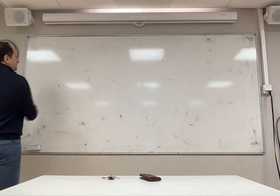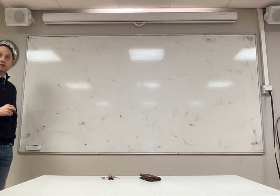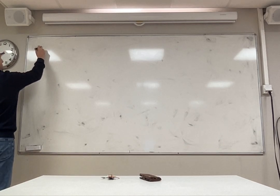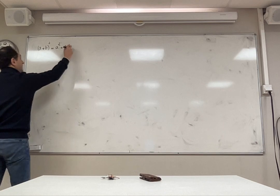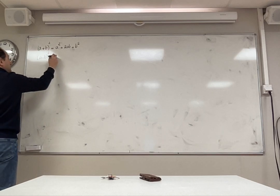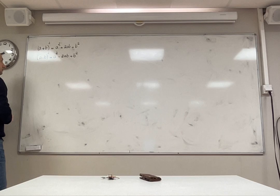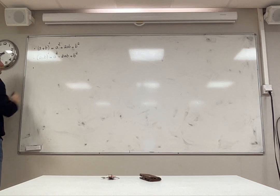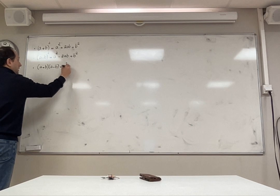Let us practice a little bit about the squaring rule and conjugate rule. We have the formula: a plus b squared equals a squared plus 2ab plus b squared, and also a minus b squared equals a squared minus 2ab plus b squared. These are called squaring rules. And we also had the conjugate rule: a plus b times a minus b equals a squared minus b squared.